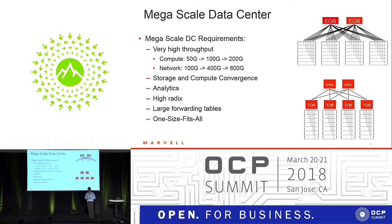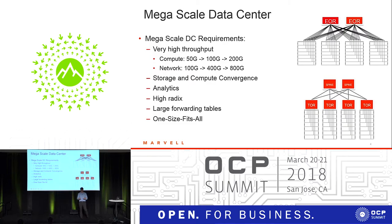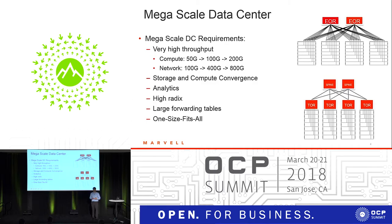What do Megascale data centers care about? First and foremost, speed — going today from 50G on the server to 100G and 200G in two or three years, and on the network side from 100G to 400G and 800G. Storage and compute convergence creates requirements for lossless traffic and priority flow control. Analytics is very important to understand what's happening in the switch and network to reconfigure VMs and find paths to eliminate congestion. High radix on switches eliminates the number of hierarchies required. Large forwarding tables — especially with end-of-row configurations managing many servers — are critical. And one-size-fits-all: a 1RU box deployable across the whole data center.